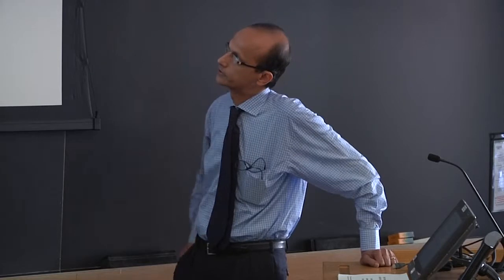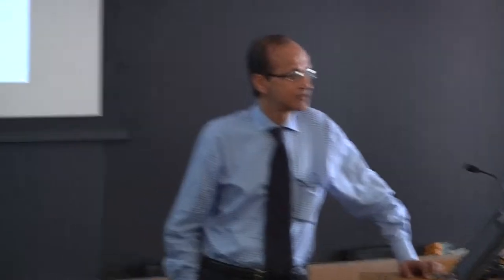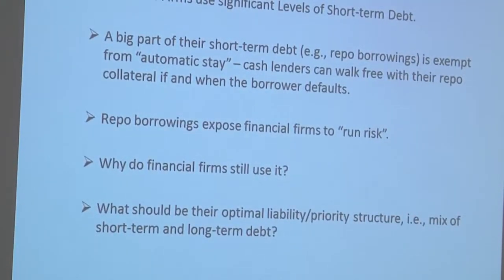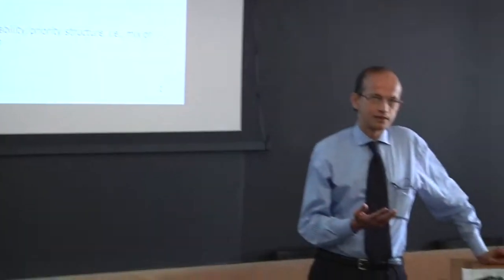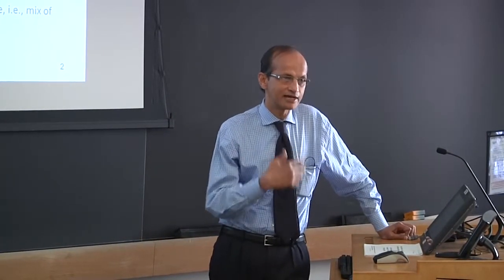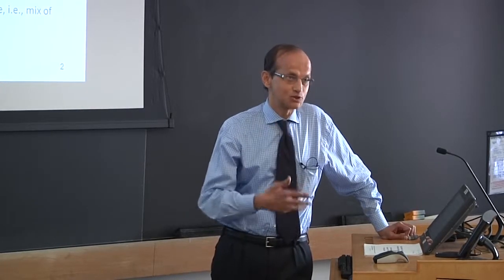Before I go into a summary of my paper with JK, I want to give the big picture — the main takeaways and themes. Some of this is general stylized fact and some are consequences of our paper. Financial firms use significantly more short-term debt compared to non-financial firms. A very big part of this short-term debt is exempt from automatic stay. This is where creditor rights — the main title of my talk — kicks in. Exemption from automatic stay means that if you are a money market mutual fund lending cash to JP Morgan with collateral, that collateral is not covered by automatic stay.